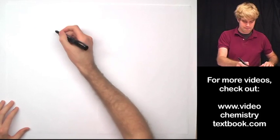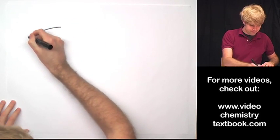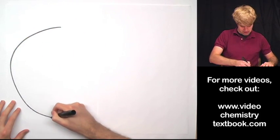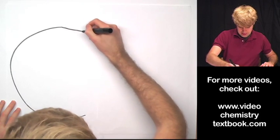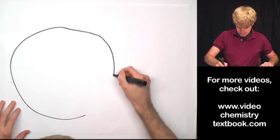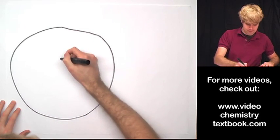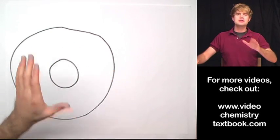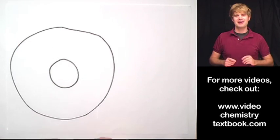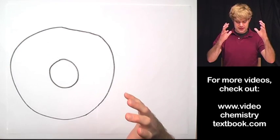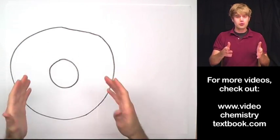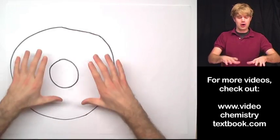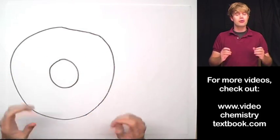So I'm going to draw a tire. Here is our big tire. Pretty brilliant, right? It's not a donut, it's a tire. So this tire is filled with air, right, because we pump air into the tire to give it more pressure.